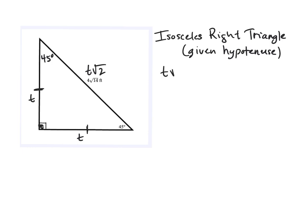So in this case, T root 2 is equal to 4 root 14. And if I divide both sides by root 2, I can see that my T would be 4 root 7.